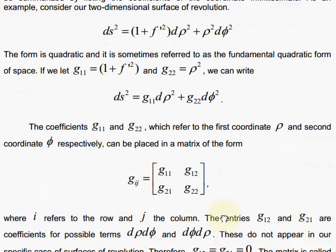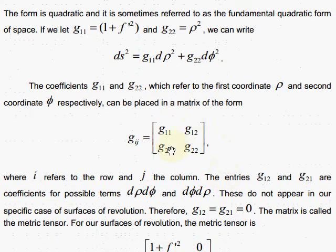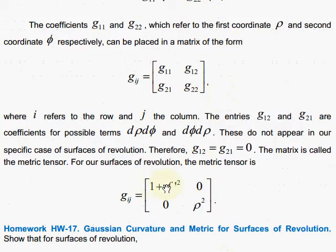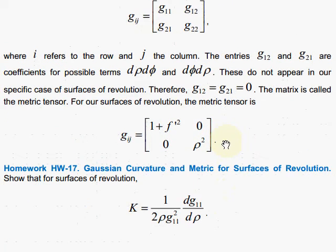So for our case, the off-diagonal components are zero. So we have for g1,1, the 1 plus f prime squared, and for g2,2, the rho squared.